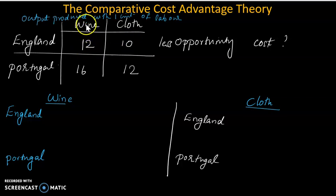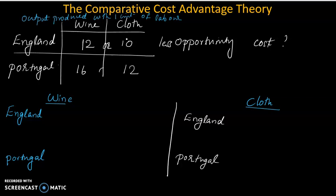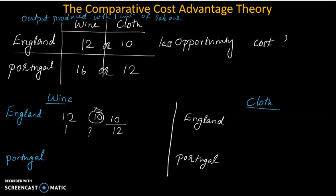In the case of England, you have 12 units. For 1 unit of wine produced, how many units of clothing are forgone? That is 10 divided by 12.